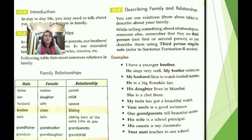'My husband likes to watch football matches — he is a big Ronaldo fan,' 'His daughter lives in Mumbai — she is a chef there,' 'My twin has got a beautiful watch,' 'Your uncle is a good swimmer,' 'Our grandparents tell beautiful stories,' 'His wife is a school principal,' 'His cousin is my classmate,' 'Your aunt teaches in our school.' These are examples of how to refer to family relations.